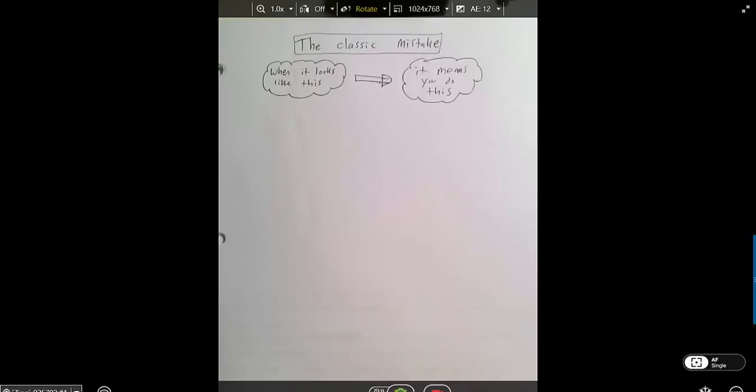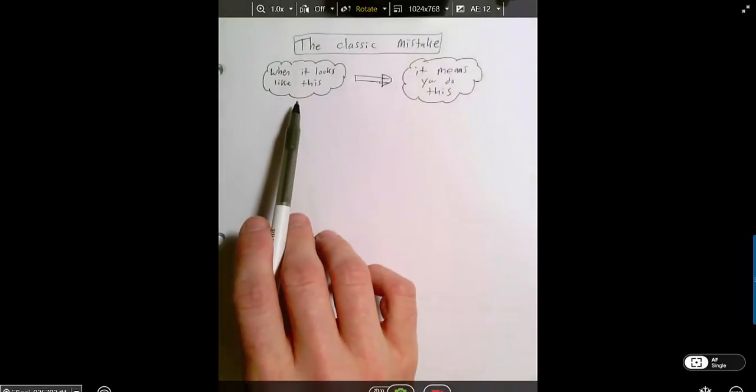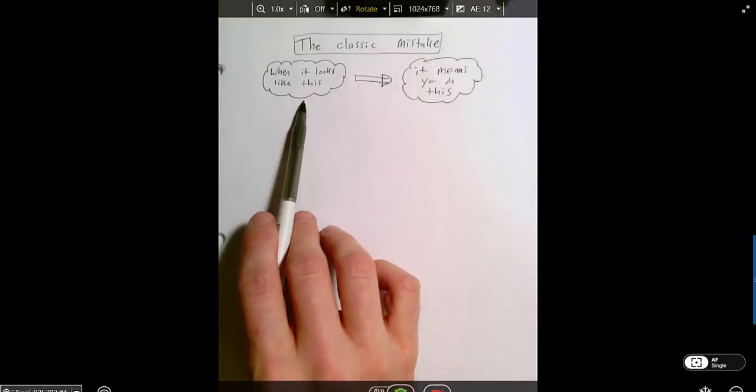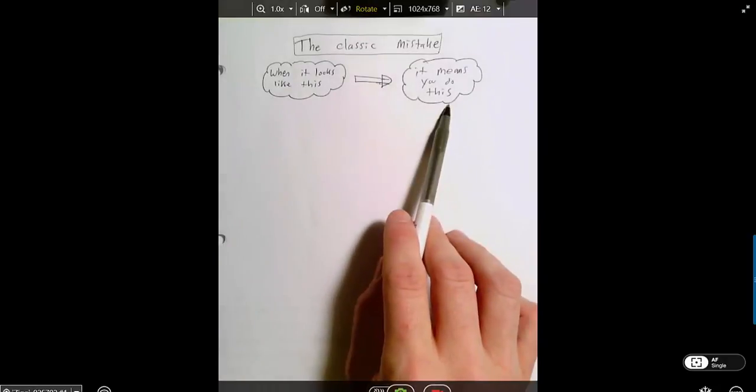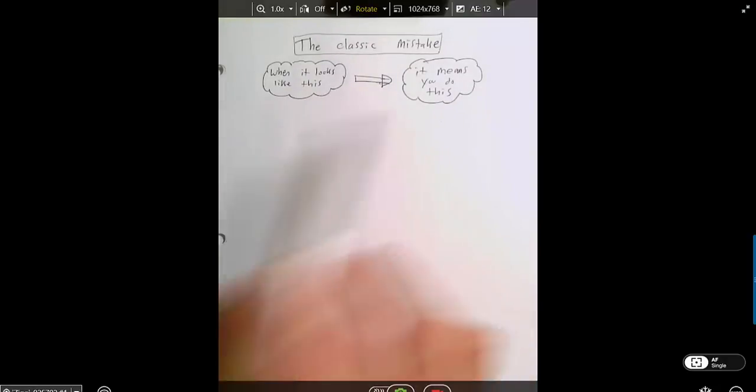And here's the trap. The trap is the following kind of thinking. You look at a problem and you say, oh, when a problem looks like this, it means I do this. It's that pattern that's the trap.